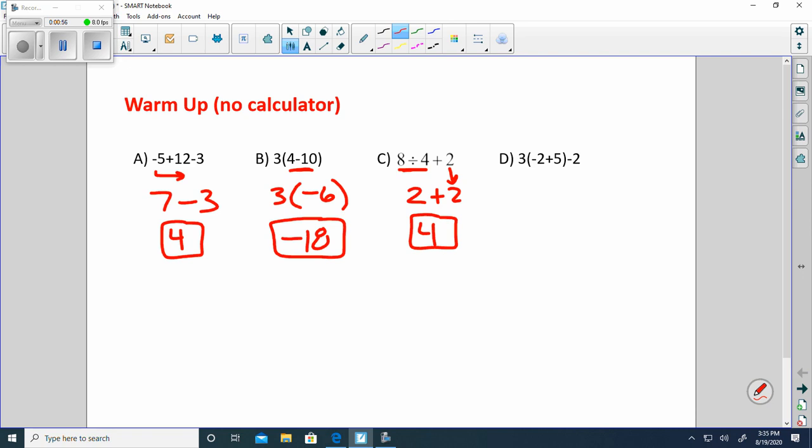Go ahead and try letter D. That's 3. Take care of what's inside the parentheses. If something you want to buy is $2, you have $5 in your pocket, so you have $3 left. Subtract 2. 3 times 3 is 9 because that takes place before subtraction. 9 subtract 2 is 7.